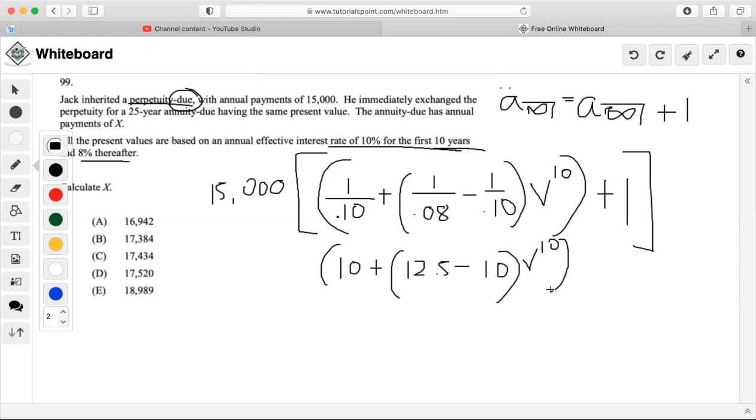So 12.5 minus 10 times—we have to discount back at 10%—times 1.10 to the negative 10. So we get 0.9638 plus 10. This is going to be 10.9638582.